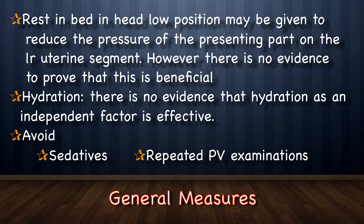General measures for spontaneous pre-term labor include bed rest in head-low position to reduce the pressure of the presenting part on the lower uterine segment, though there is no evidence this is beneficial. There is no evidence that hydration as an independent factor is effective. Sedatives like pethidine must be avoided as they may accelerate labor and depress the fetus. Repeated biovaginal examinations must also be avoided to prevent introduction of infection or stimulation of labor.